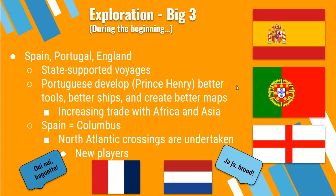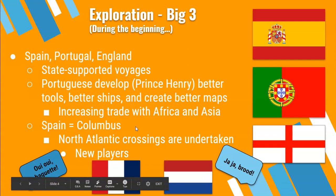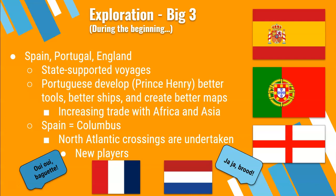Prince Henry the Navigator is really important — a great piece of evidence to use in everything. Spain had Columbus, who decided not to go around the tip of Africa but to go west because the planet is round — he expected to hit China or India. Instead, he hits a huge landmass nobody knew was there. When people realize this is not India, North Atlantic crossings are undertaken. New players, France and the Dutch, enter. Everyone was out for the three G's: Gold, Glory, and God. They wanted routes to Asia but found the new world instead.